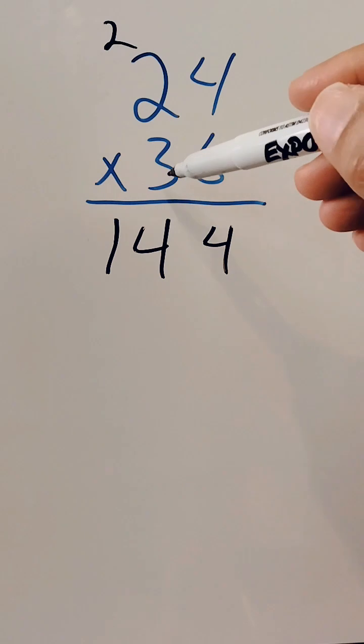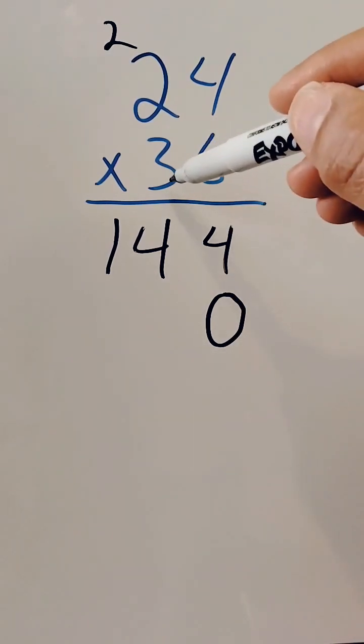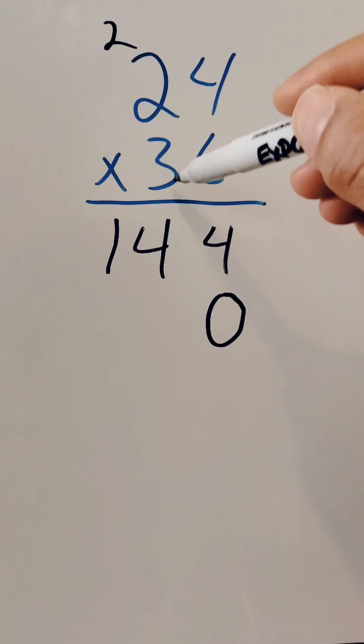Now, before we move to the tens place and do the 3 times each number, we have to have a placeholder. We're going to put a placeholder in this ones place right here, and then we'll move over to the tens place and start doing our multiplication up top.